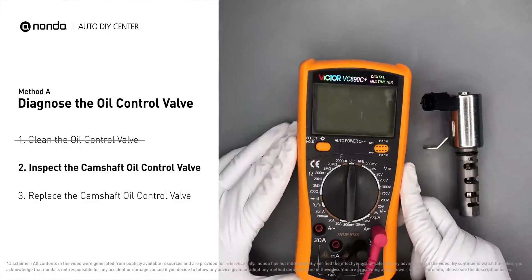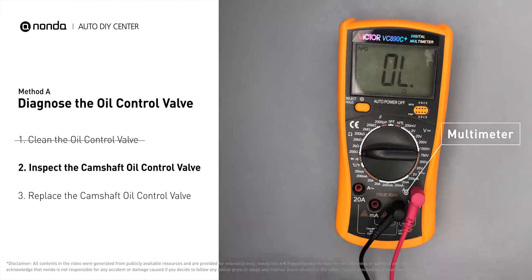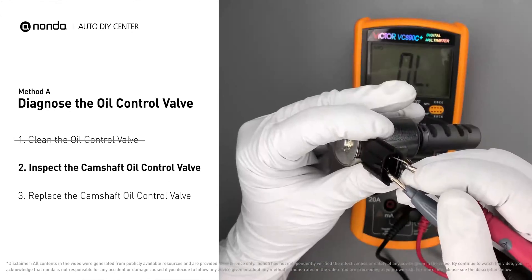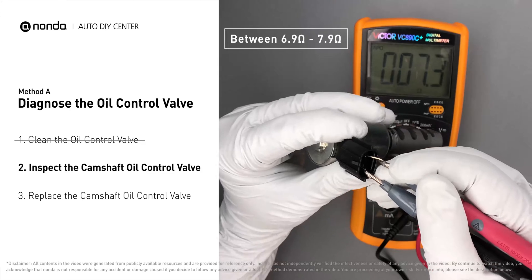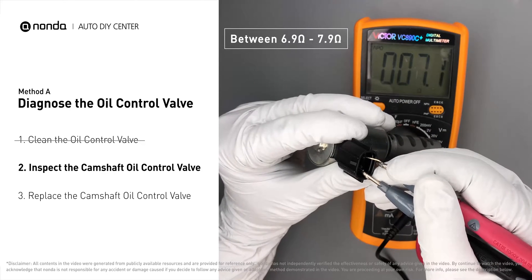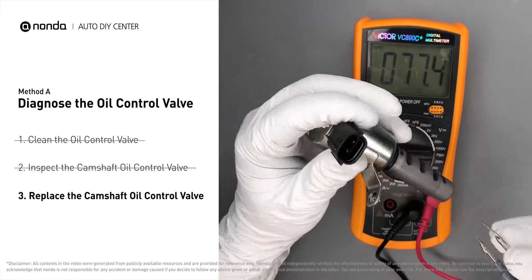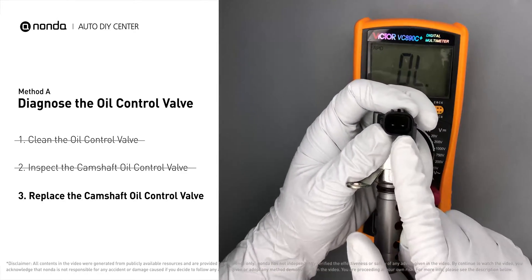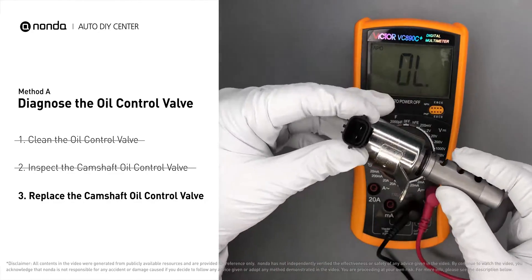Then use a multimeter to test the camshaft oil control valve. At an ambient temperature of 68 degrees Fahrenheit, the valve resistance should be between 6.9 ohms and 7.9 ohms. If you do not get a reading in this range, it indicates that the camshaft oil control valve is faulty and needs to be replaced.